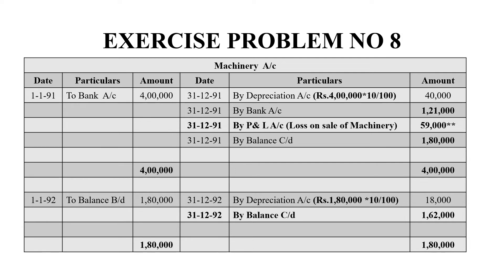On 31-12-91, machinery worth 1,21,000 has been sold for 1,21,000. So on the credit side, by bank account we have 1,21,000. And on 31-12-91, for the machinery sold at a loss, we refer to the working note — the loss is 59,000. That goes on the debit side as a loss on sale.